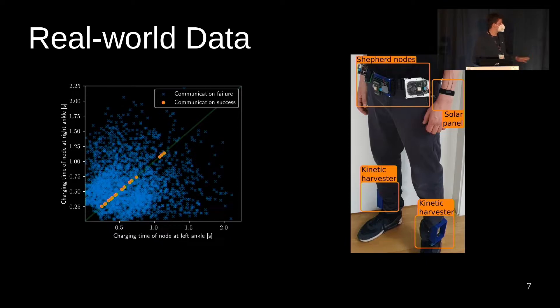For example, here you see the charging times of two kinetic energy harvesting devices mounted on my ankles while I'm in the park jogging. On the x-axis, you see the charging times of the node on my left ankle, and on the y-axis, you see the charging times of the node on my right ankle.